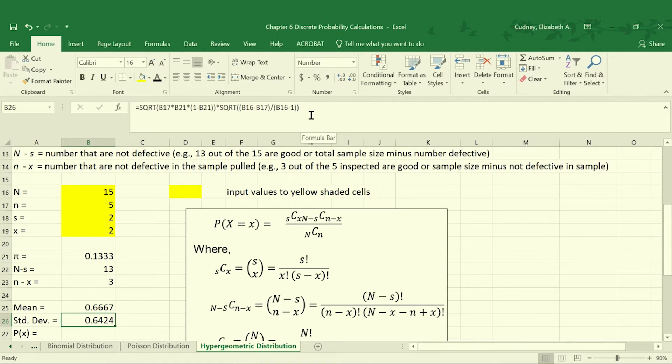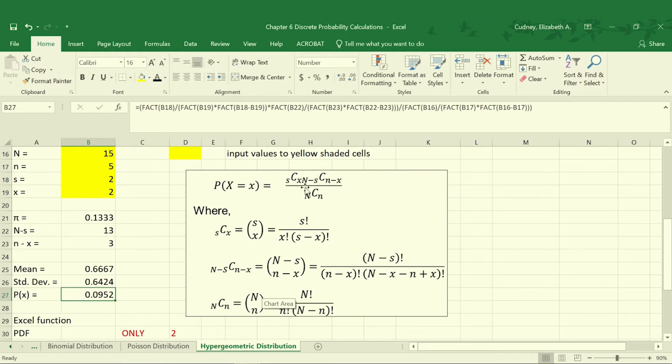So again, I would encourage you, as you're typing this in, to pause the video to make sure you have that equation correct. Once we have our standard deviation, now we can calculate our probability. So our probability is taking apart this equation. So you'll see here, I've broken down each part of that equation, so that we've got the pieces multiplied by each other, divided by the last one. So for the sake of time, I'm not going to read through that step by step, but I want to make sure you can see the equation so that you can type that in.